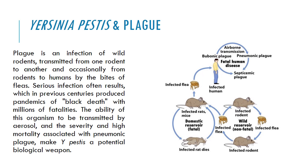Yersinia pestis and plague. Plague is an infection of wild rodents transmitted from one rodent to another and occasionally from rodents to humans, causing the disease previously known as black death, which was a serious pandemic disease causing millions of fatalities. The ability of this organism to be transmitted by aerosol is associated with pneumonic plague and also makes Yersinia pestis considered a potential biological weapon. In the adjacent image you can see the life cycle of Yersinia pestis when it is causing the plague.